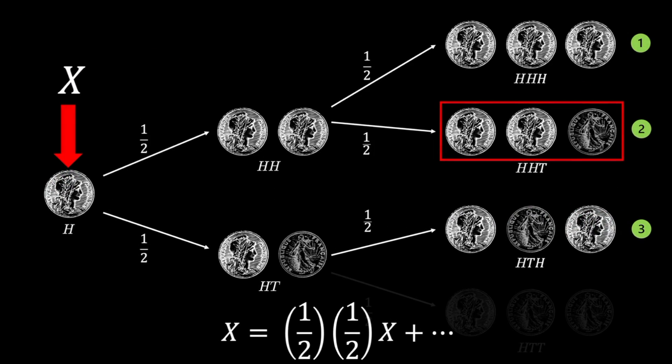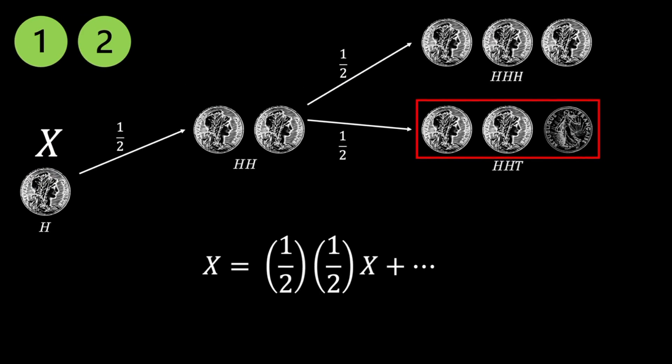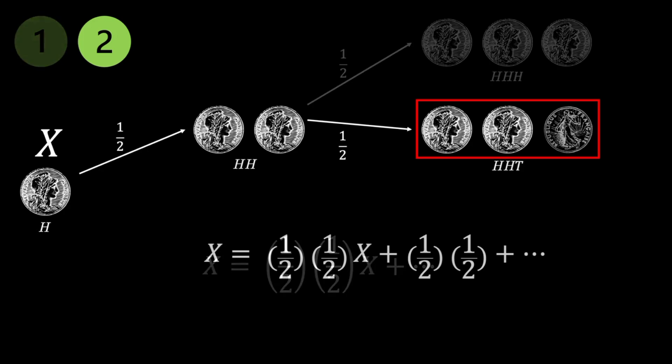Moving on to paths 1 and 2. Path 2 is the trivial case of the winning sequence being obtained after flipping hits followed immediately by tails. Let's add its probability to the sum, the product of two halves.